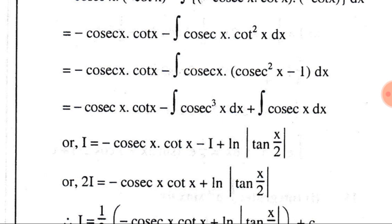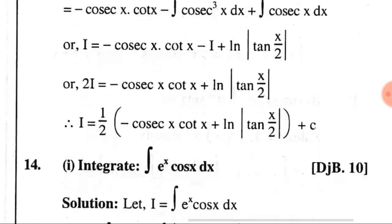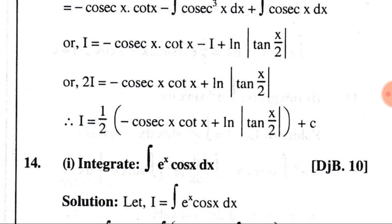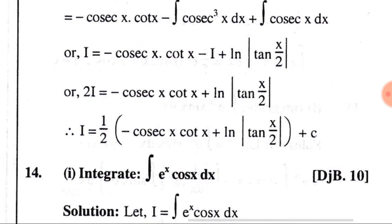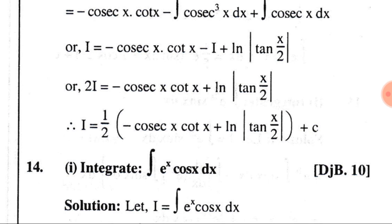Let I = ∫cosec³(x) dx. The equation becomes I = −cosec(x)·cot(x) − I + log|tan(x/2)|. Bringing −I from the right to the left side gives 2I = −cosec(x)·cot(x) + log|tan(x/2)|. Dividing by 2: I = (1/2)[−cosec(x)·cot(x) + log|tan(x/2)|] + C.